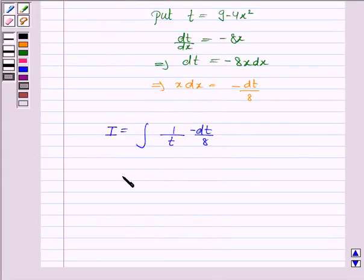So this is equal to minus 1 upon 8 into integral of 1 upon t dt. Now we know that the integral of 1 upon x is log x and here we have t.